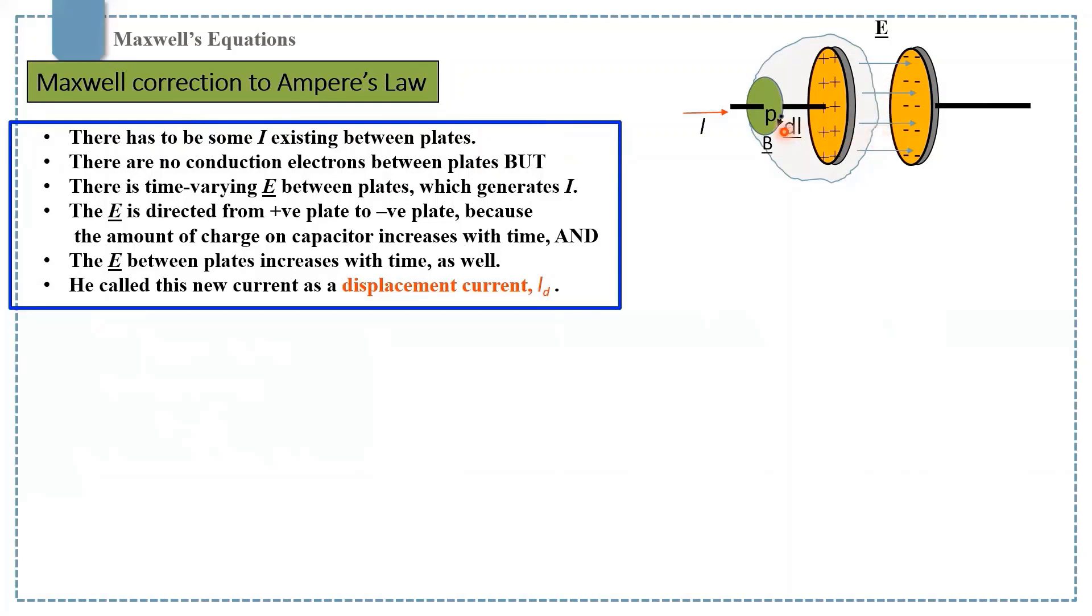If the current stops, there is an electric field between plates as long as the plates are charged, but there is no magnetic field around the wire. Maxwell decided that the new type of current is associated with this changing electric field, and he named that current a displacement current.